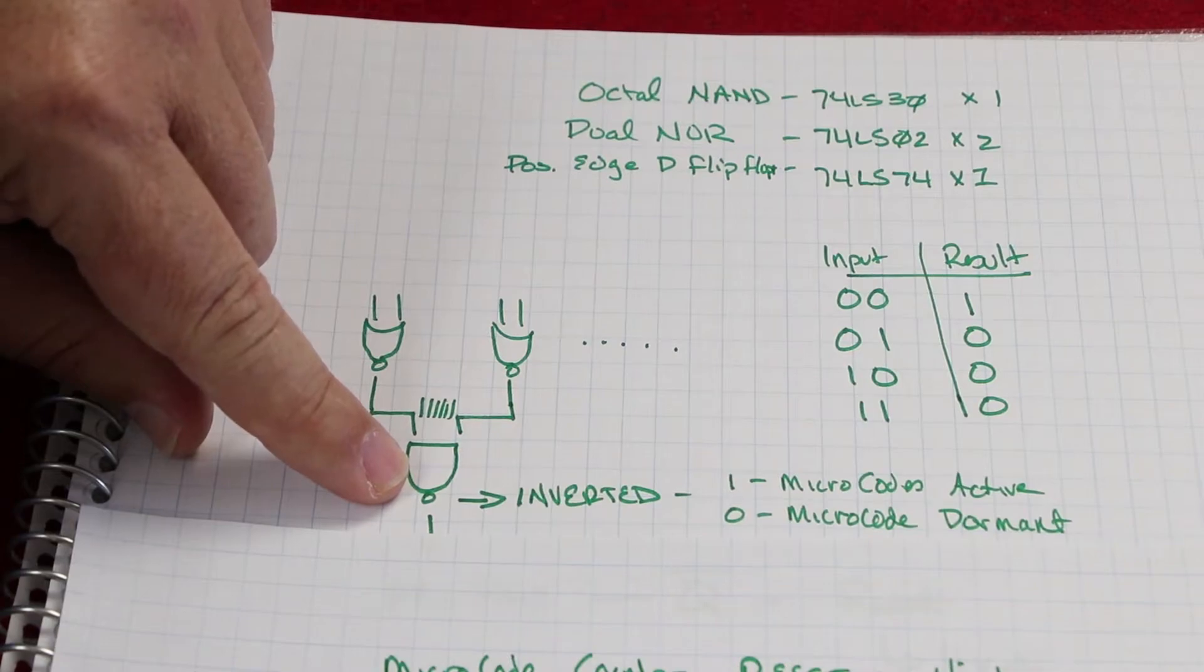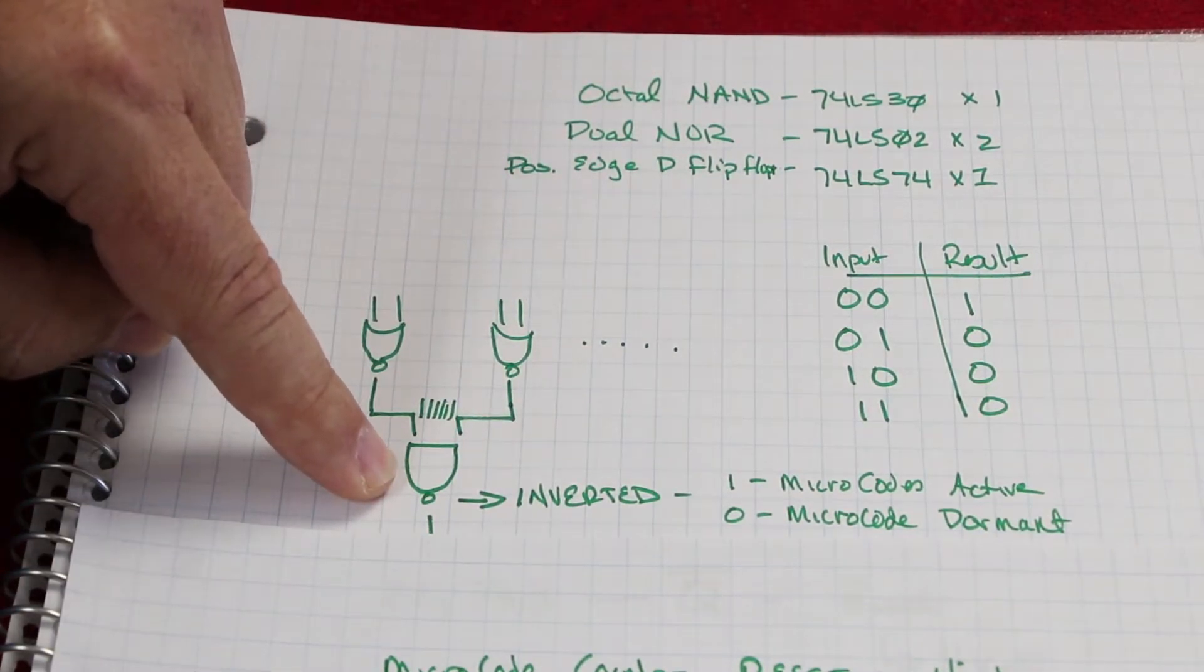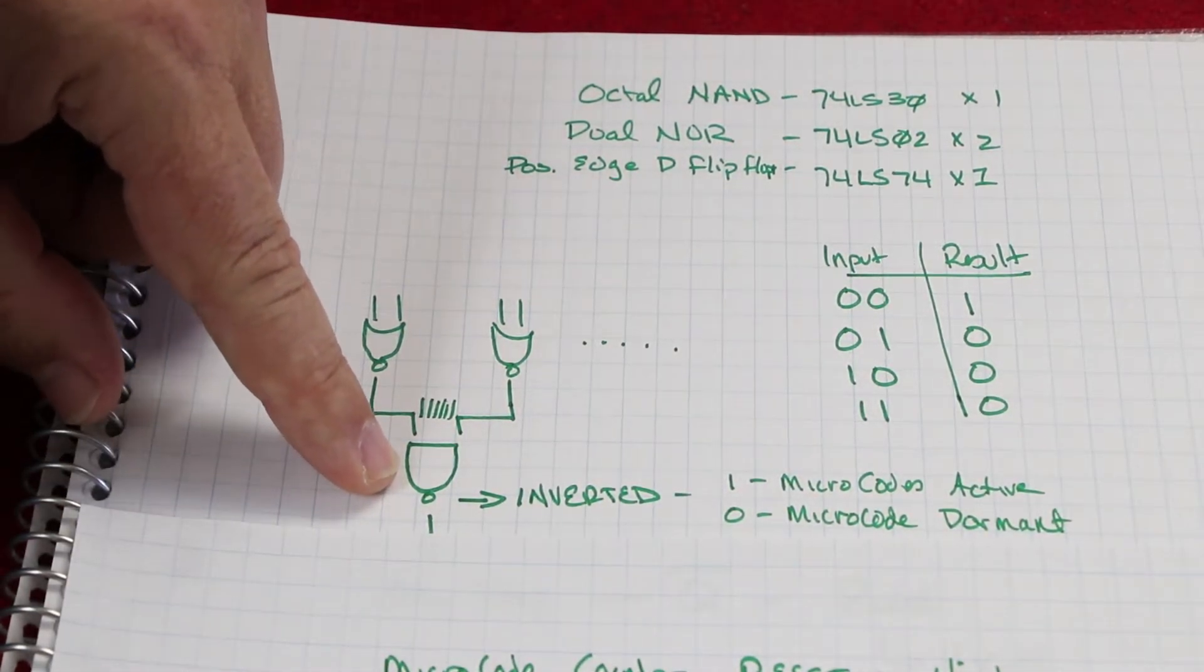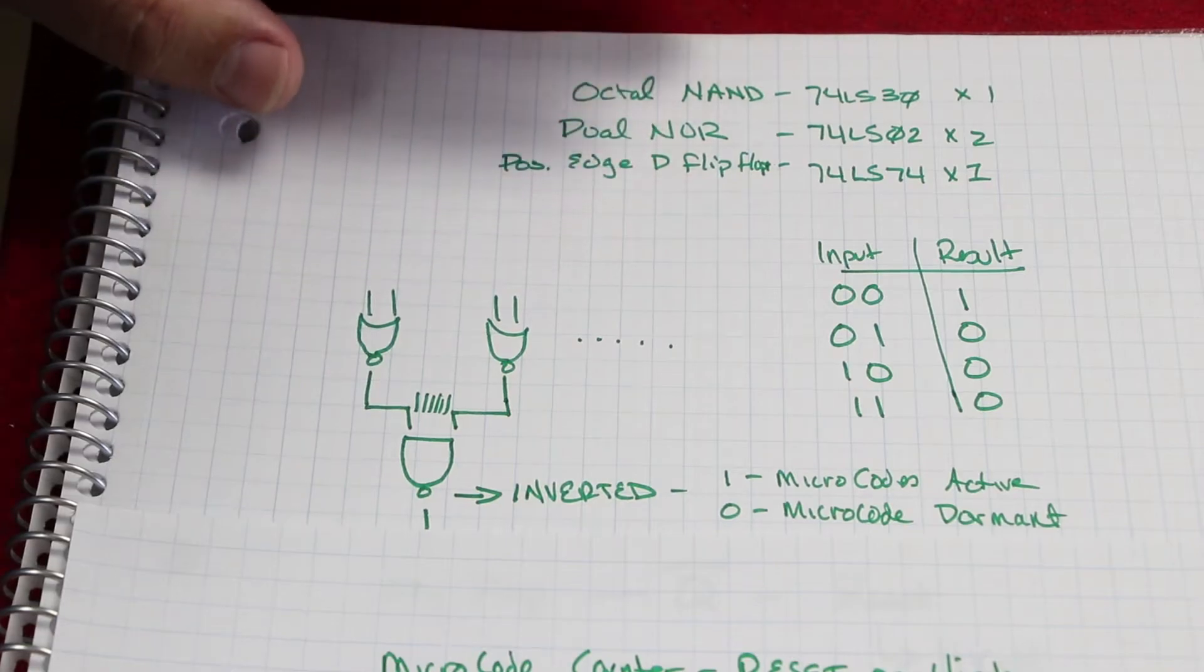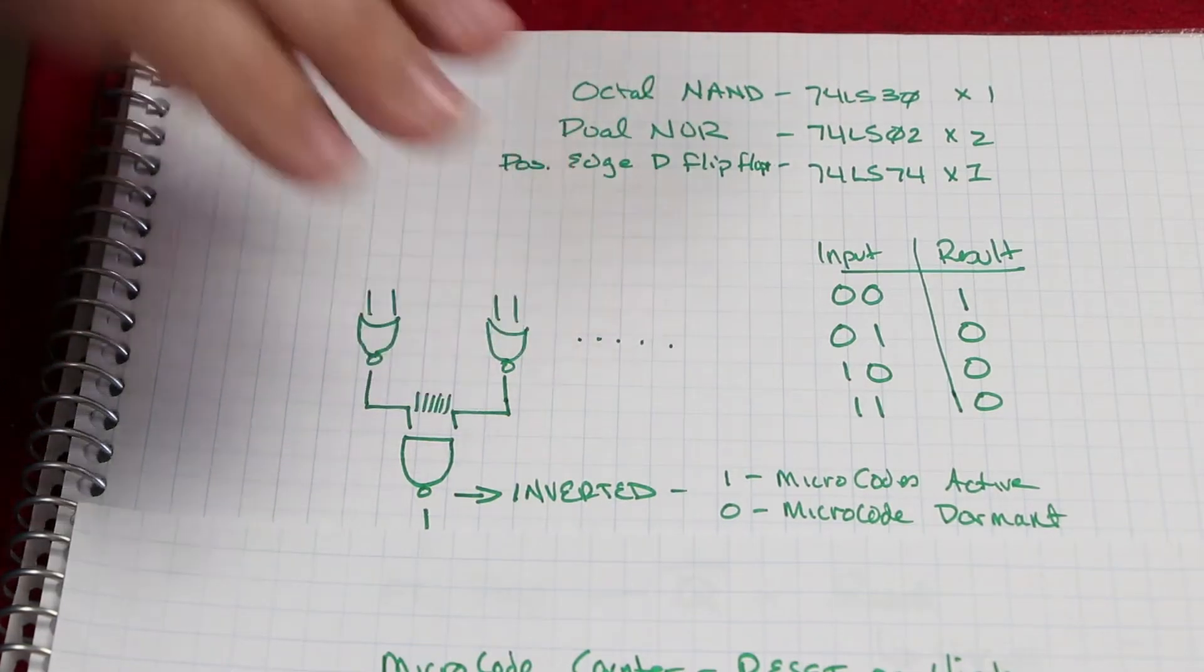So what I'm going to do is all of these inputs, eight of them, come into the octal NAND. Let's go back to our basic logic. If we have an AND gate, that means that however many inputs we have, they all have to be high in order for the output to be high.